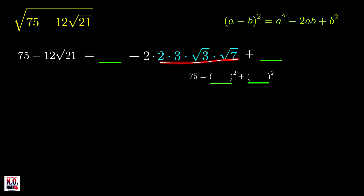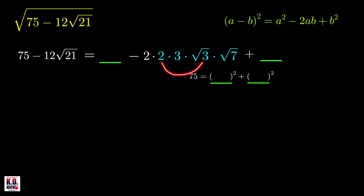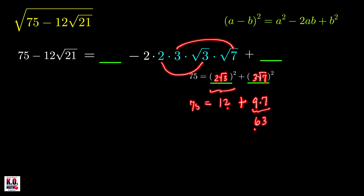We want two factors such that the sum of their squares equals 75. Trying 6 and √21: 36 plus 21 is 57 — not 75. Trying 2√3 and 3√7: squaring 2√3 gives 4 times 3 which is 12, and squaring 3√7 gives 9 times 7 which is 63. So 63 plus 12 is indeed 75. We've found the two correct factors.